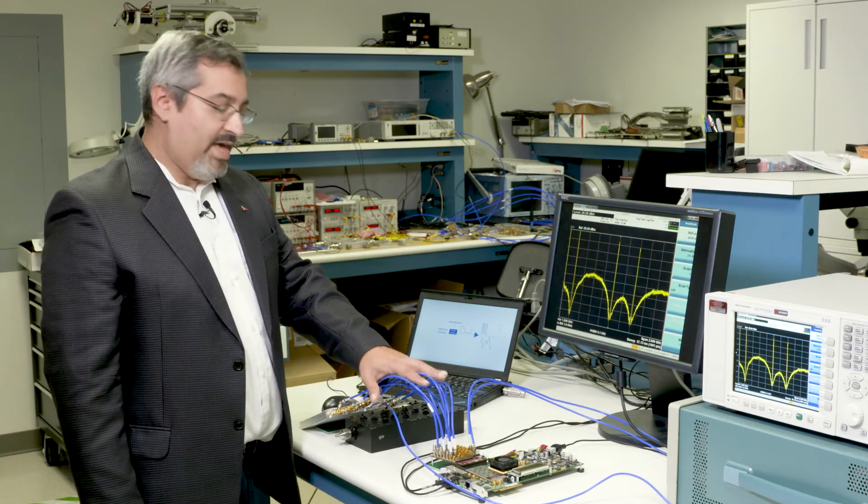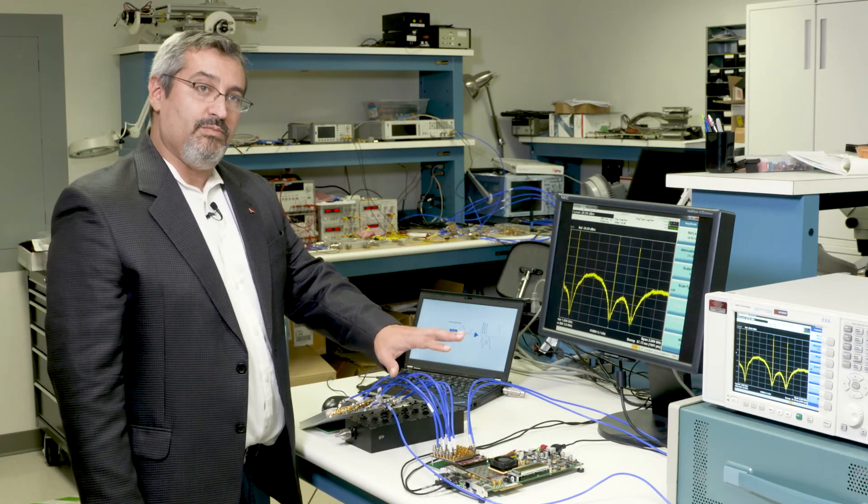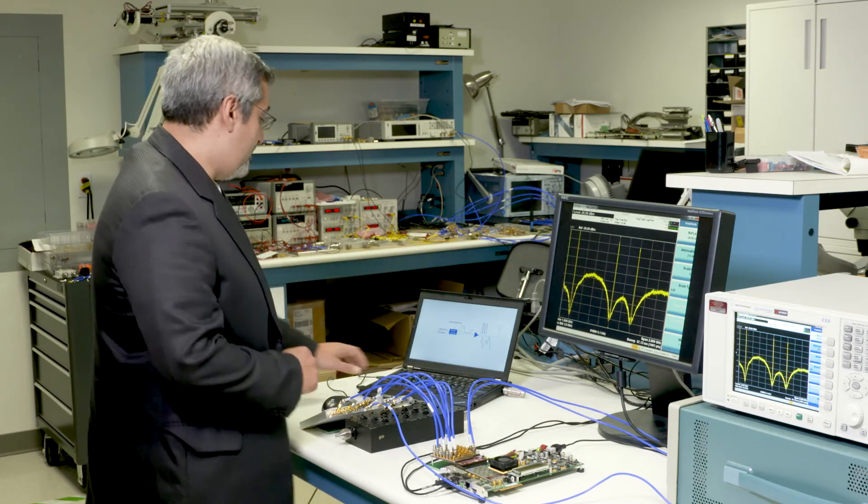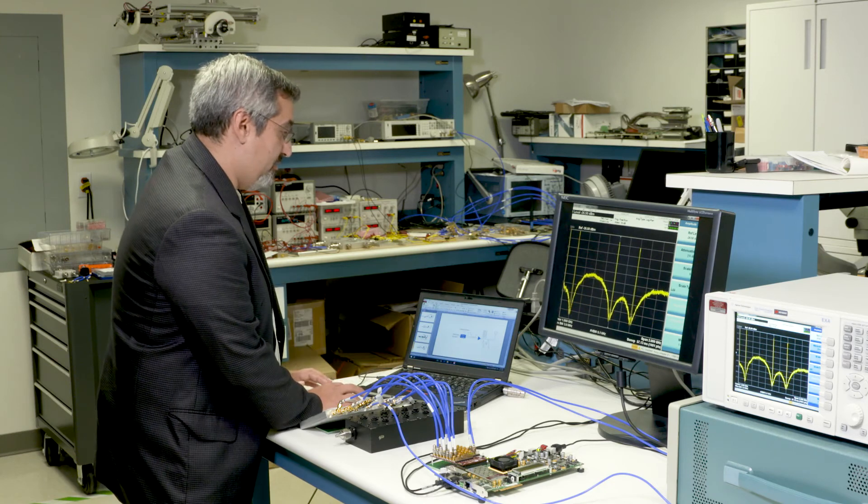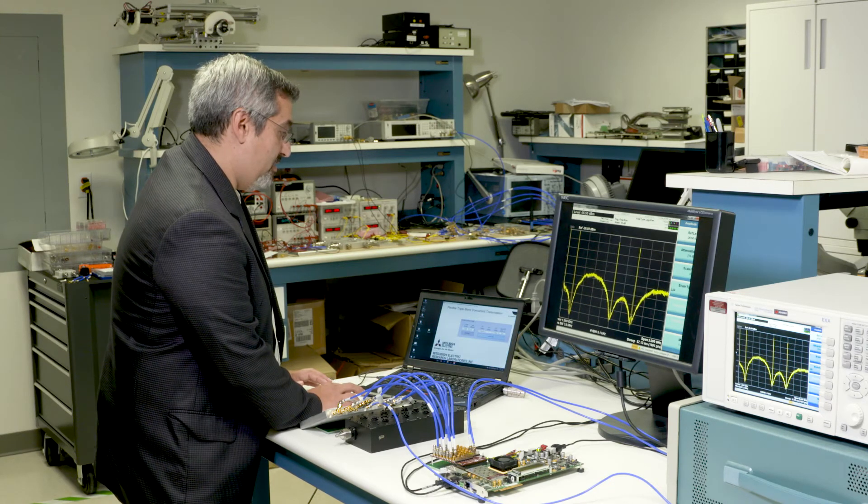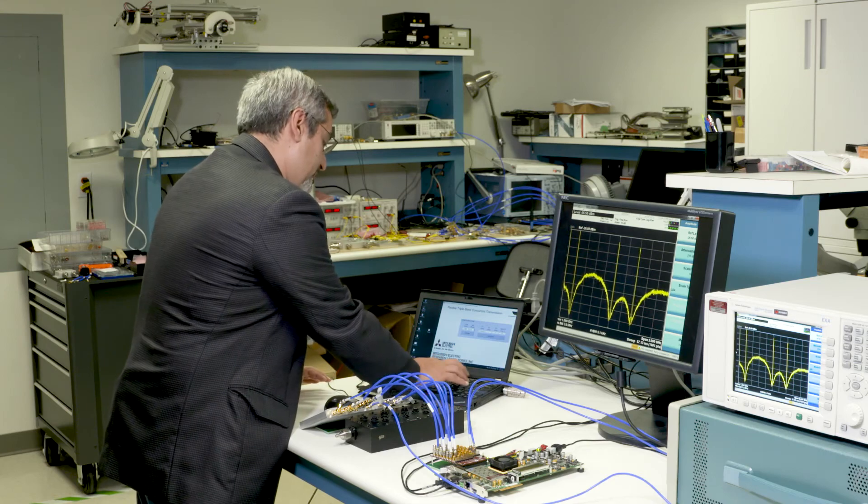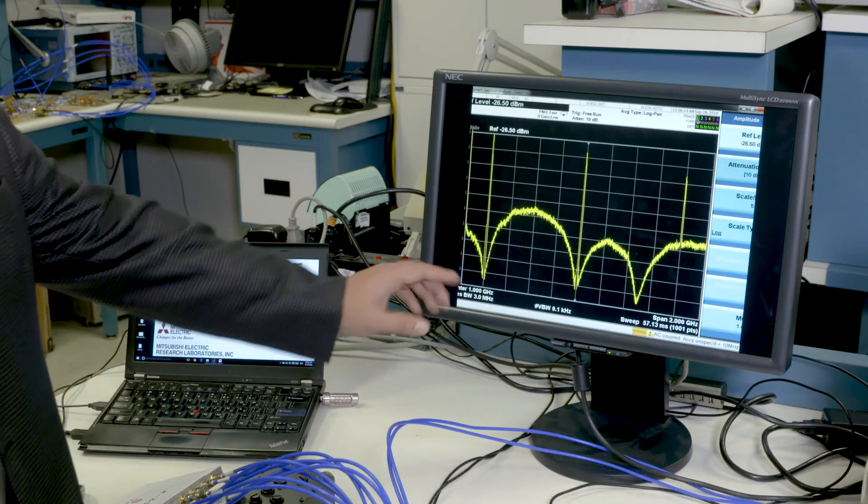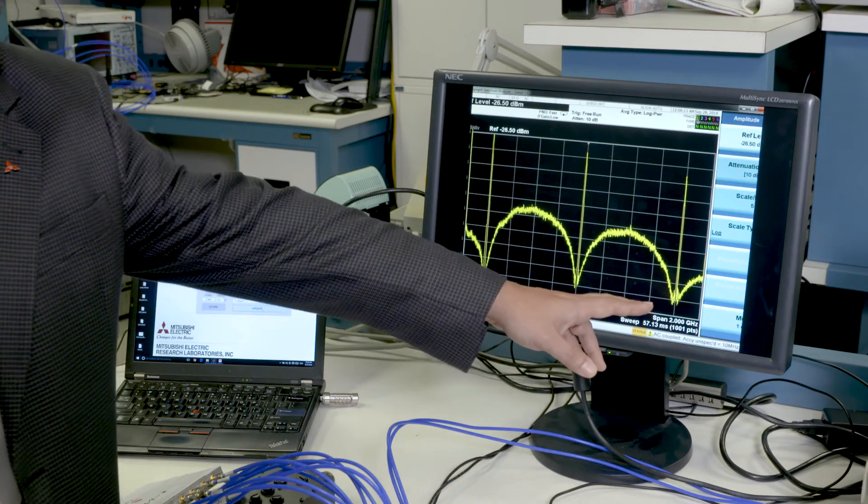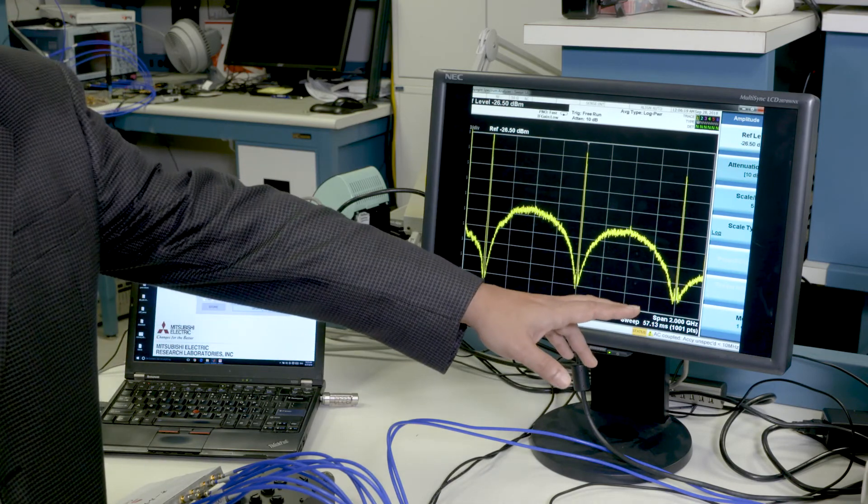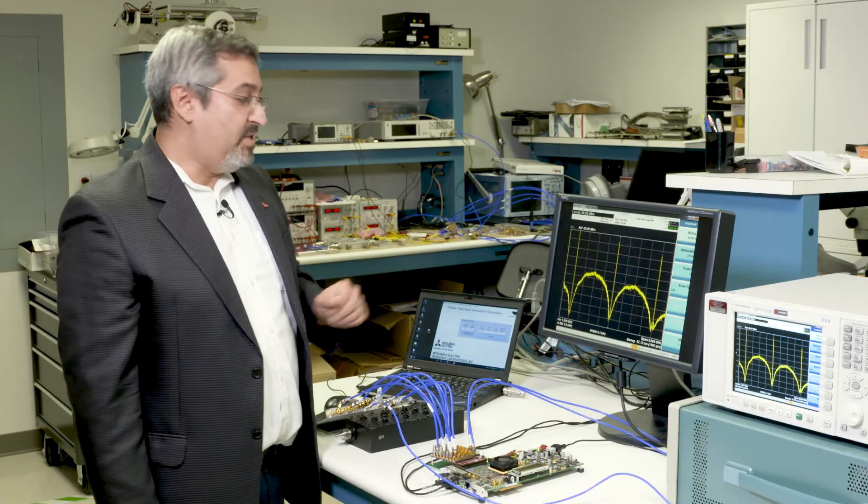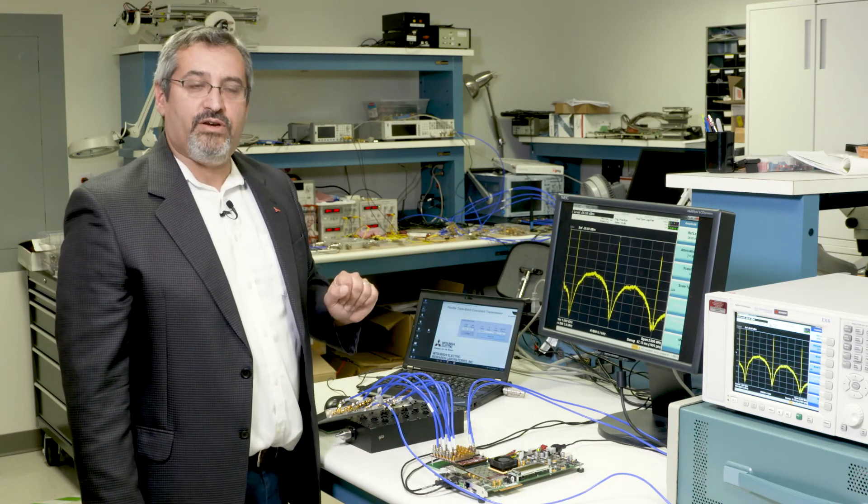And then command the digital portion of our transmitter to change frequencies. And this can be done with a simple command or change of the operating parameters of the processor here. And so you can see we've now increased or moved our one of these channels over to a much higher frequency, but still using the same hardware without any change to the hardware configuration.